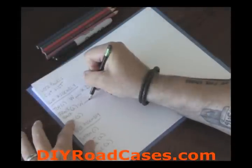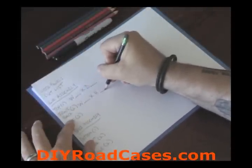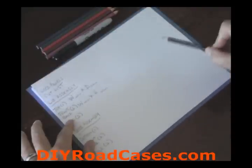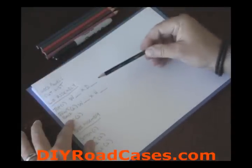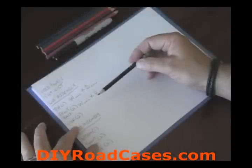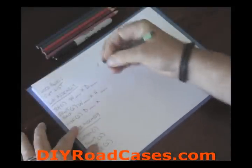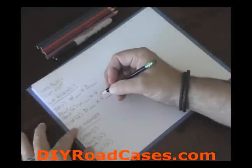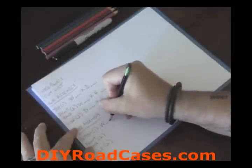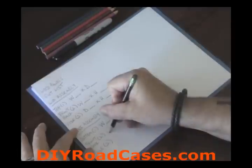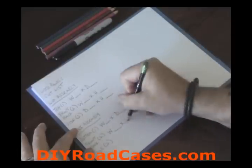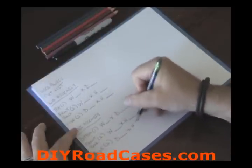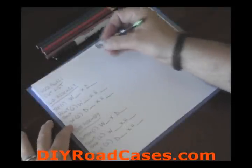Your front and back panels are width by height, since they span left to right and top to bottom. Then your side panels are depth by height — front to back and up and down — which are unknown at this point. The base assembly follows the same pattern: bottom is width by depth, front and back panels are width by height, and sides are depth by height.